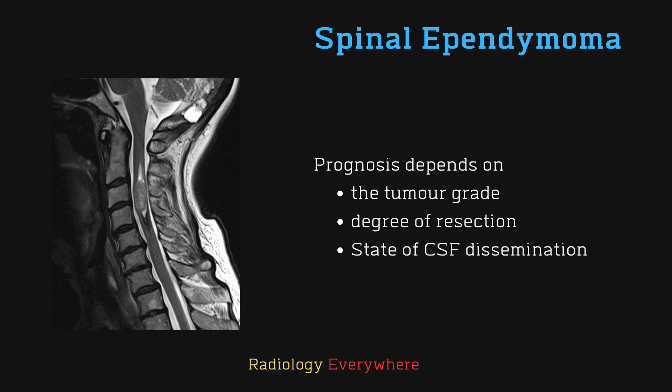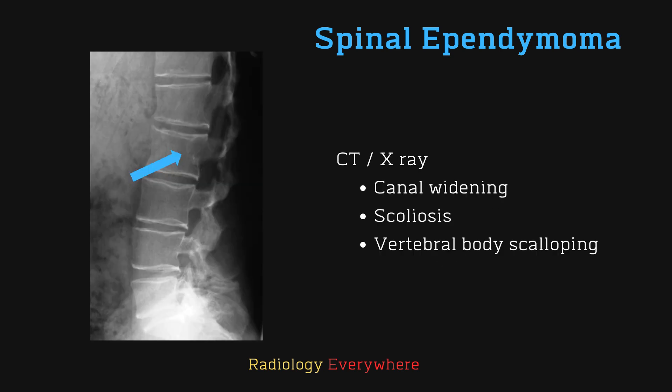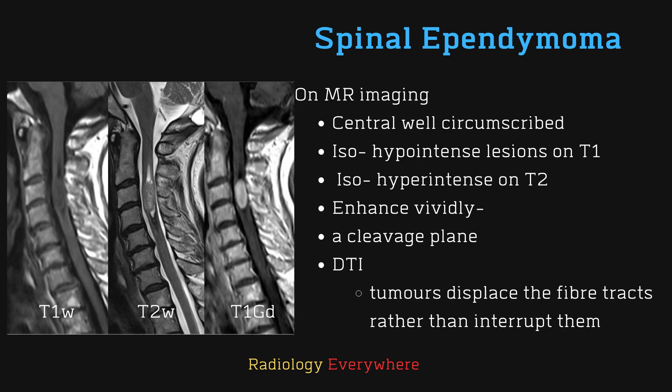When considering imaging, CT may show canal widening, scoliosis, and posterior vertebral body scalloping. On MRI, we can see a central, well-circumscribed iso- to hypointense lesion on T1-weighted images, and iso- or hyperintense lesion on T2. Most ependymomas are avidly enhancing and homogeneous in 91% of cases.